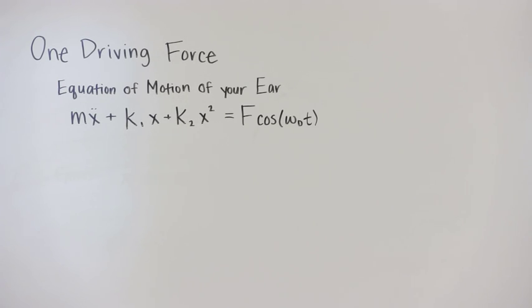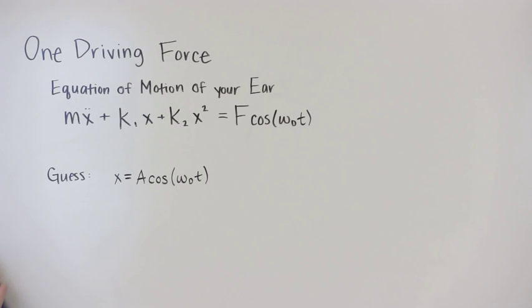To solve this non-linear differential equation, we will guess x to equal cosine of omega drive t. Now when we plug this back into our equation of motion, assuming the cochlea is driven hard enough for the non-linear term to become significant, we can analyze the squared term.